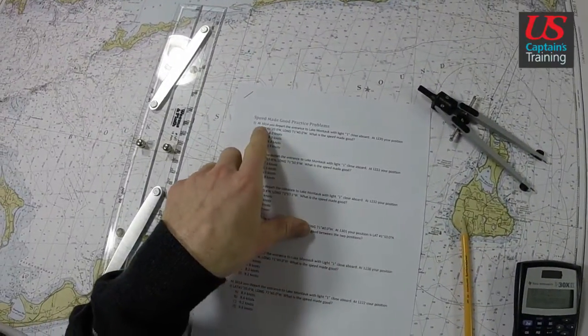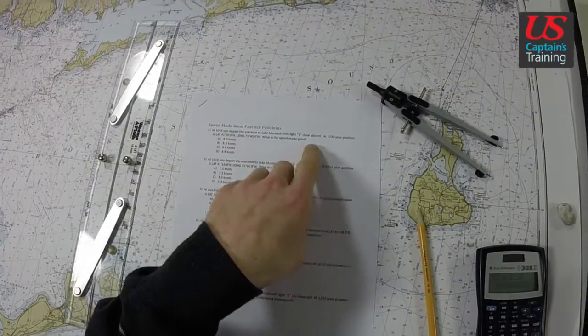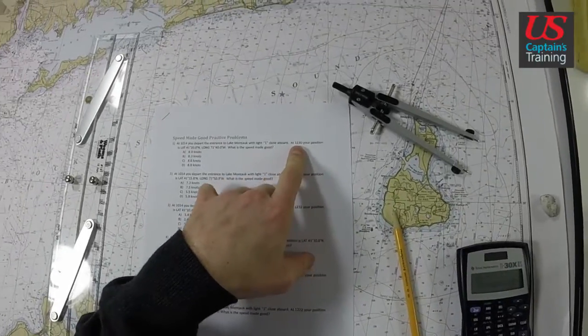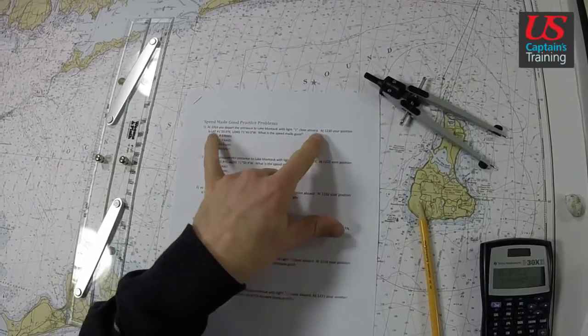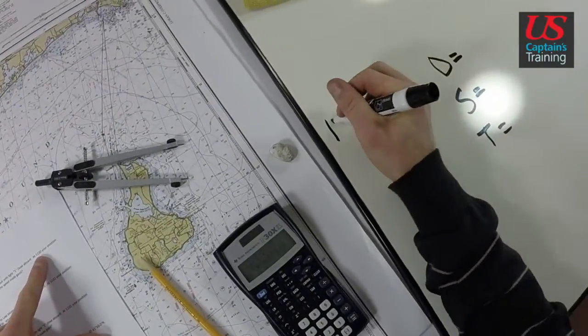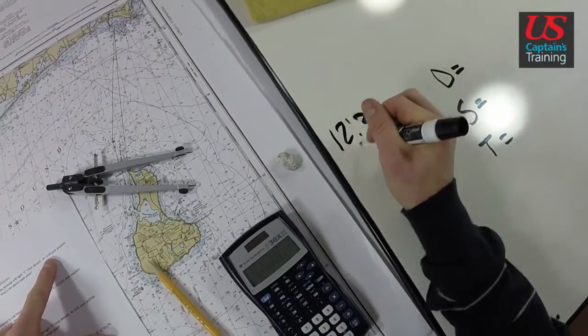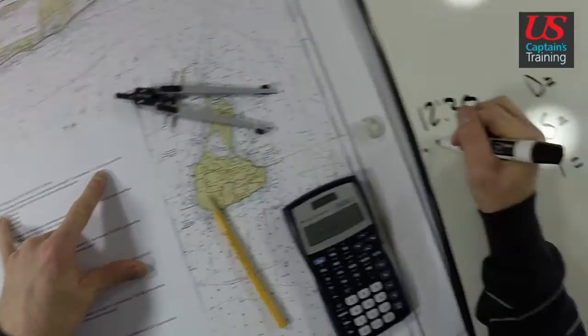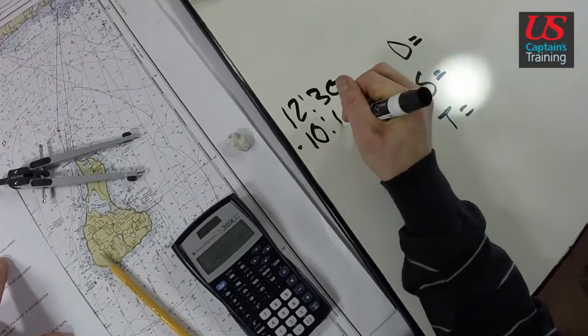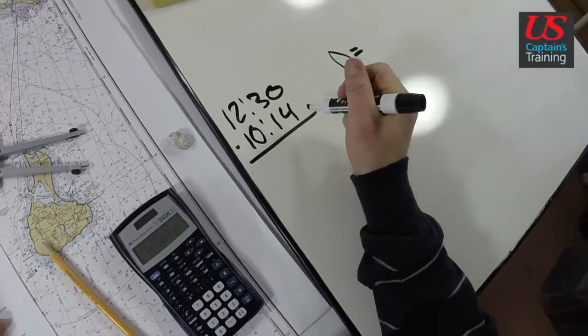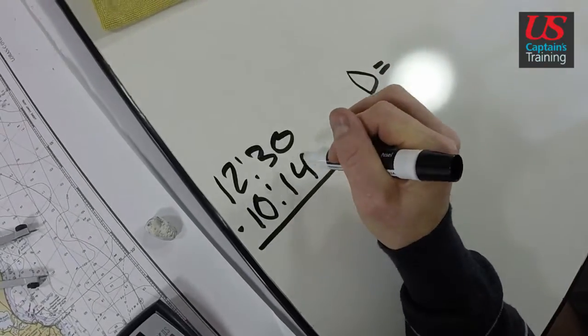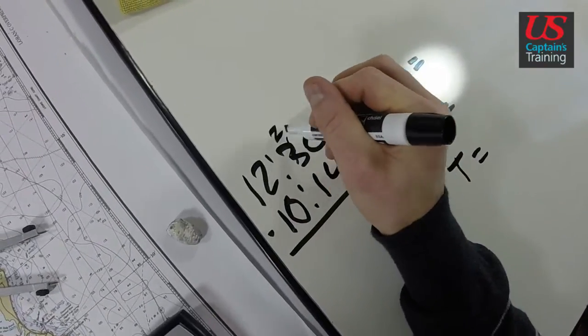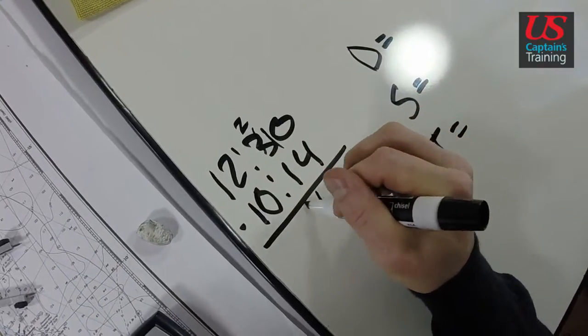We can figure it out. It said we left at 1014, we got there at 1230. You take your end time minus your start time to get the change in time, so we are looking at 1230 minus 1014. We can take 14 away from 30, borrow here, we have 16 minutes, 2 hours and 16 minutes.